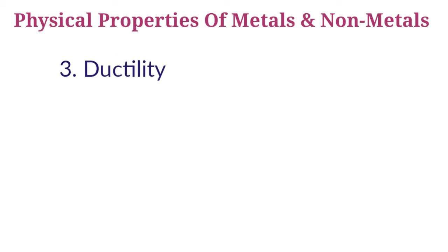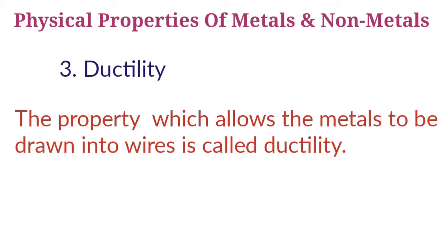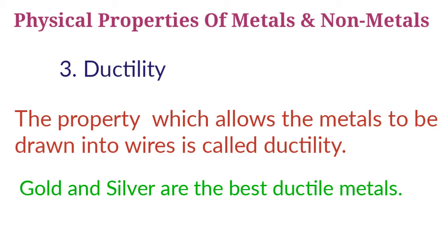Next property: ductility. Most metals can be drawn into thin wires. The property which allows metals to be drawn into wire is called ductility. Gold and silver are the best ductile metals. Copper, aluminium, iron, and magnesium metals can be easily drawn into thin wires, so they are very ductile. The wires inside electric cables are mostly made of copper metal. Non-metals are not ductile — when stressed, non-metals like sulphur and phosphorus break into pieces and do not form wires.